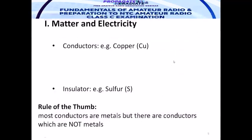Now, the properties of material. We can categorize materials in terms of their conductivity — the ability to transfer electrons. We have conductors such as copper, and insulators such as sulfur. The rule of thumb: most conductors are metals, but there are conductors which are not metals. And in between conductor and insulator, we have the semiconductor — silicon. Silicon Valley is a place where electronic equipment and gadgets are manufactured.